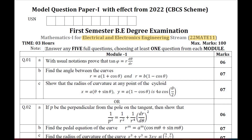You should know that 10 questions are provided and you are required to answer any 5 full questions, choosing at least one question from each module. From each module, they provide 2 full questions and you must answer at least one. Moving on to Module 1, which is on Polar Curves.